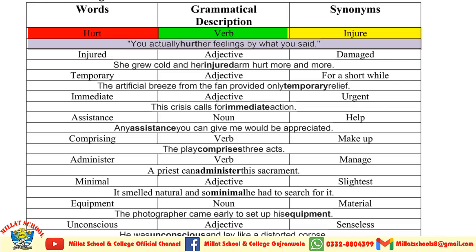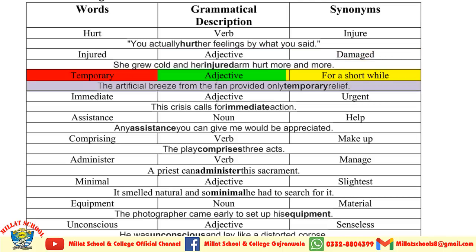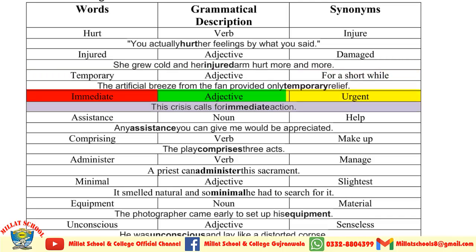Now I am coming towards the most important words from the passage. The first word is 'hurt' — its synonym is 'injure' (adjective). Example: 'You actually hurt her feelings by what you said.' Next is 'injured' (adjective), synonym: 'damaged.' Example: 'She grew cold and her injured arm hurt more and more.' Then 'temporary' (adjective), synonym: 'for a short while.' Example: 'The artificial breeze from the fan provided only temporary relief.'